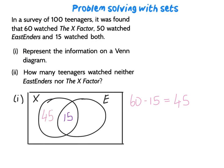And by the same reason then, well if 50 watched EastEnders but 15 also of that 50 watched X factor, we need to take 15 away from 50. So we say 50 take away 15 is 35. So 35 goes here.